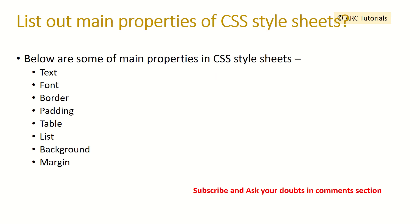Can you list down some of the main properties of CSS style sheets? Some of the main properties are: text, font, border, padding, table, list, background, and margin. These are some of the most frequently used properties in CSS style sheets.